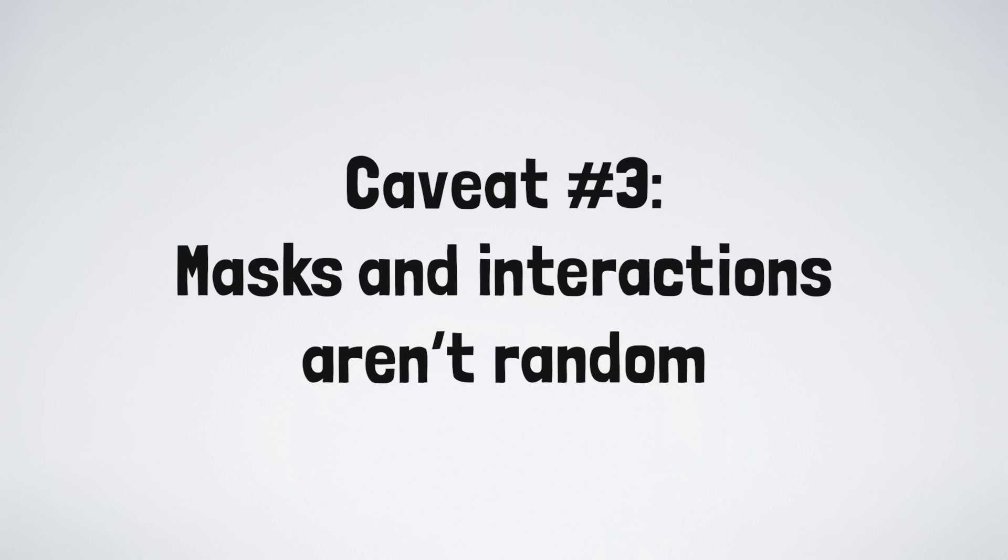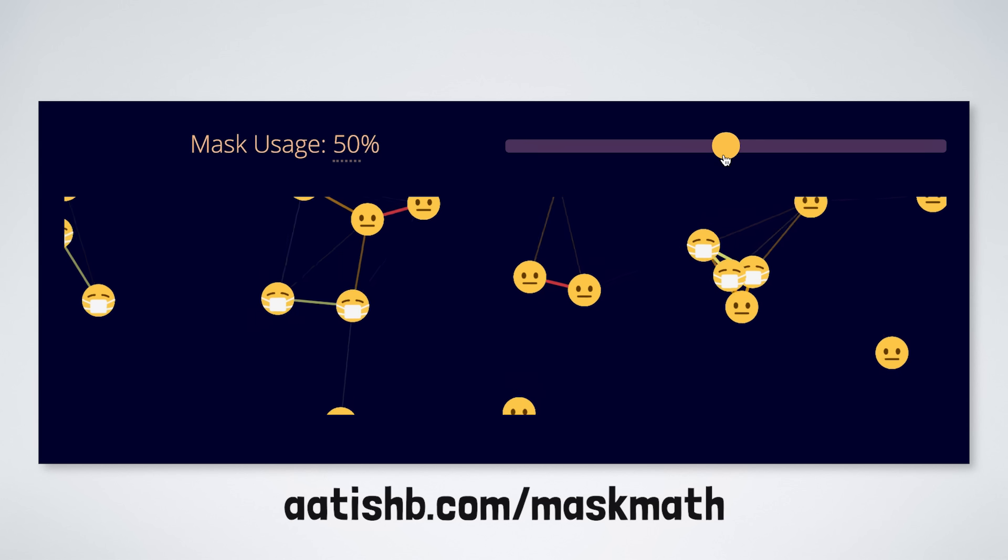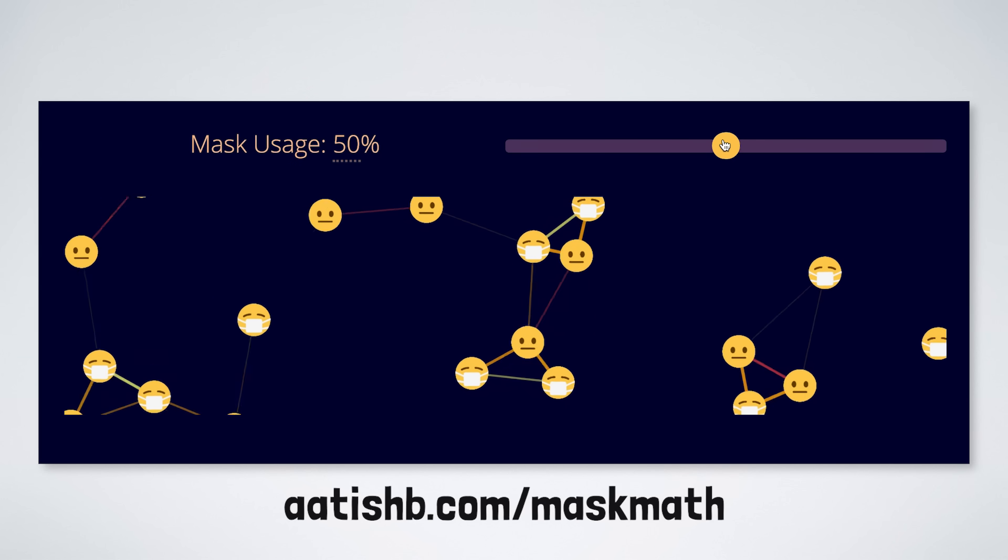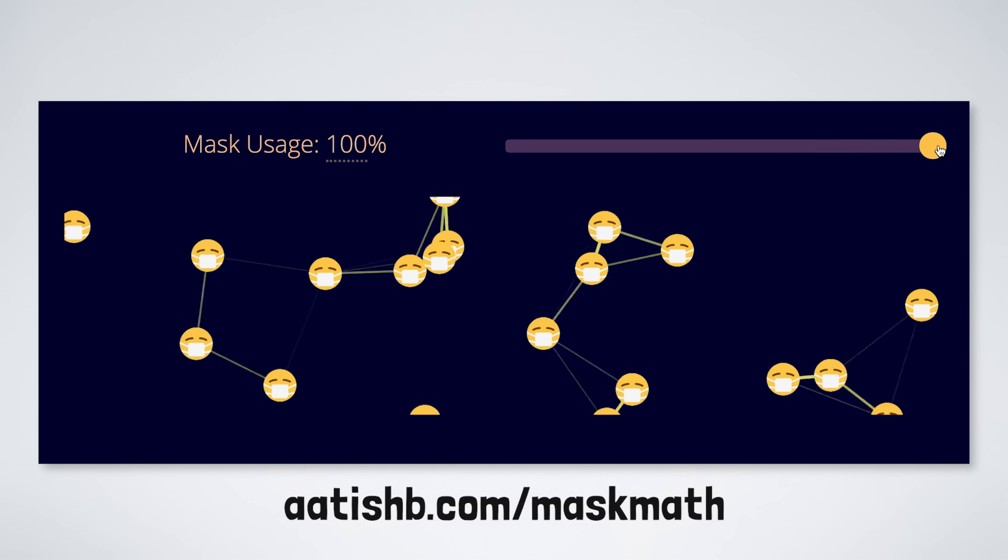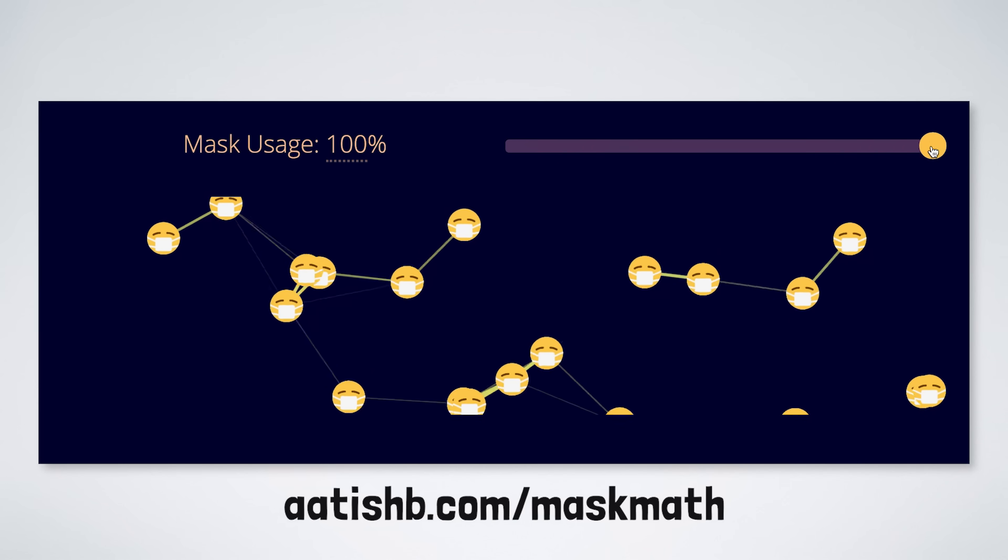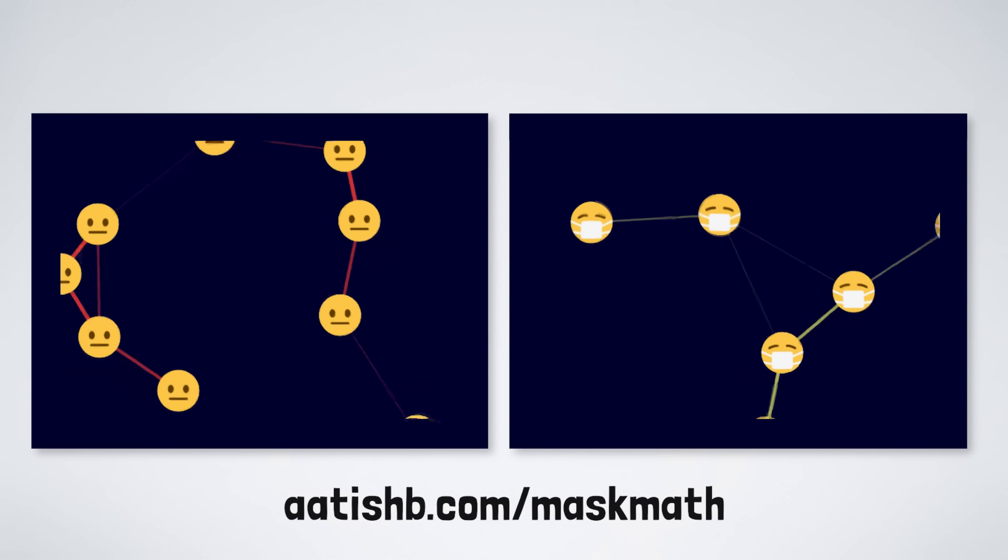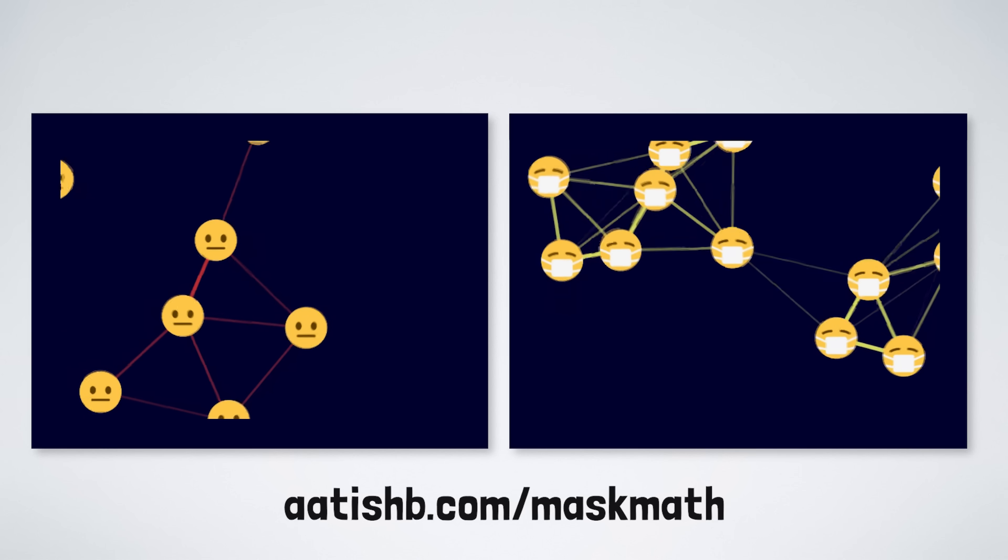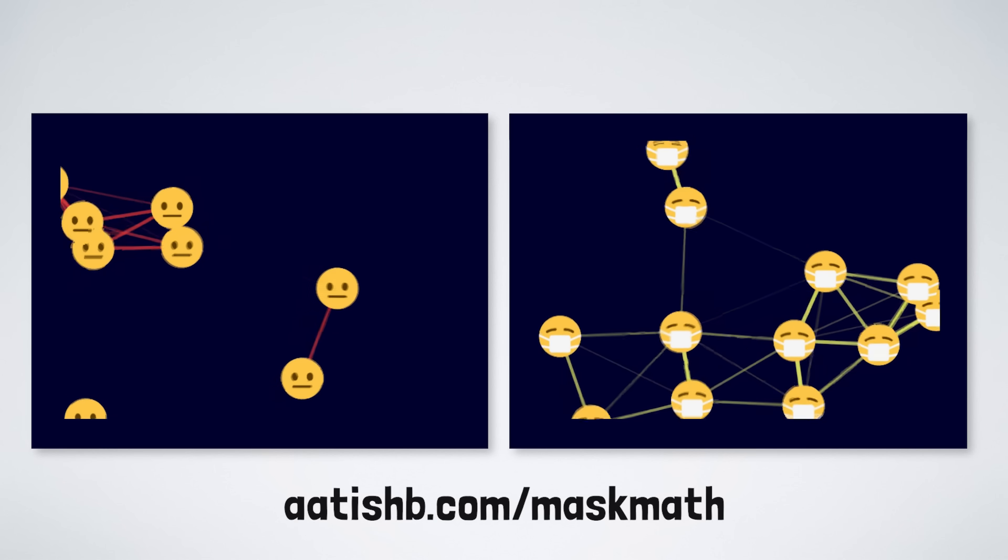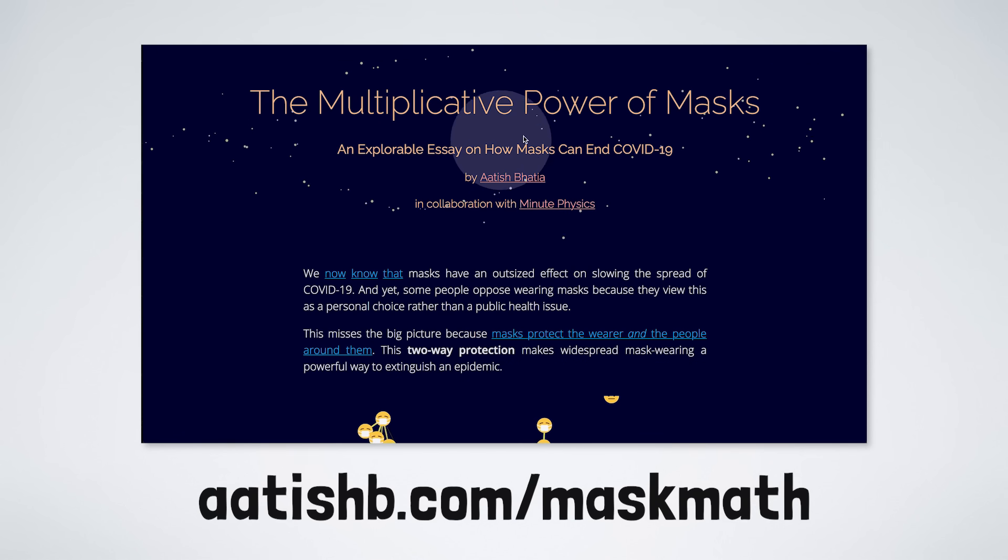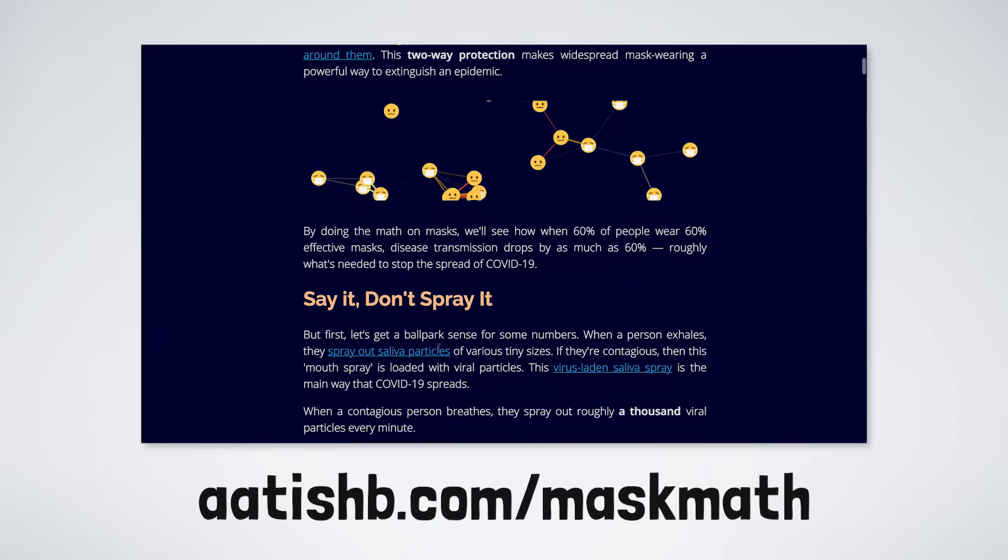For simplicity, we've assumed that contagious people are just as likely to wear masks as non-contagious people. We also assumed that people mix randomly, which isn't necessarily true. For various reasons, people who wear masks may be more likely to interact with other mask wearers, and less likely to interact with those who don't wear masks, and vice versa. Clustering non-mask users together diminishes the overall protective power of masks, and means you need more people to wear masks to achieve the same drop in transmission. Again, if you're interested in more details and references, definitely check out the interactive companion essay at otishb.com slash mask math.